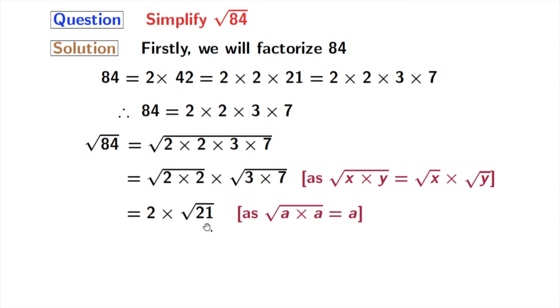In the first square root we have used the rule of square root of a times a is equal to a. Here a is 2. After multiplication we get 2 root 21 and this is our final answer.